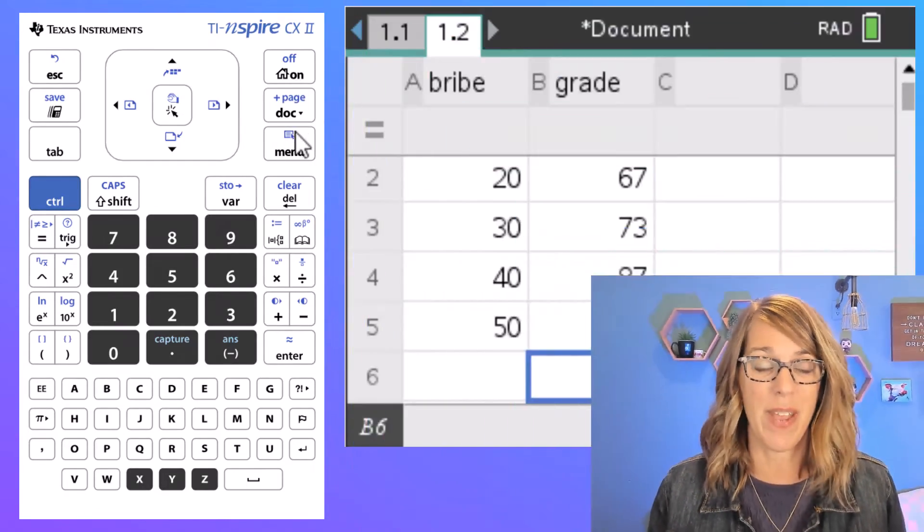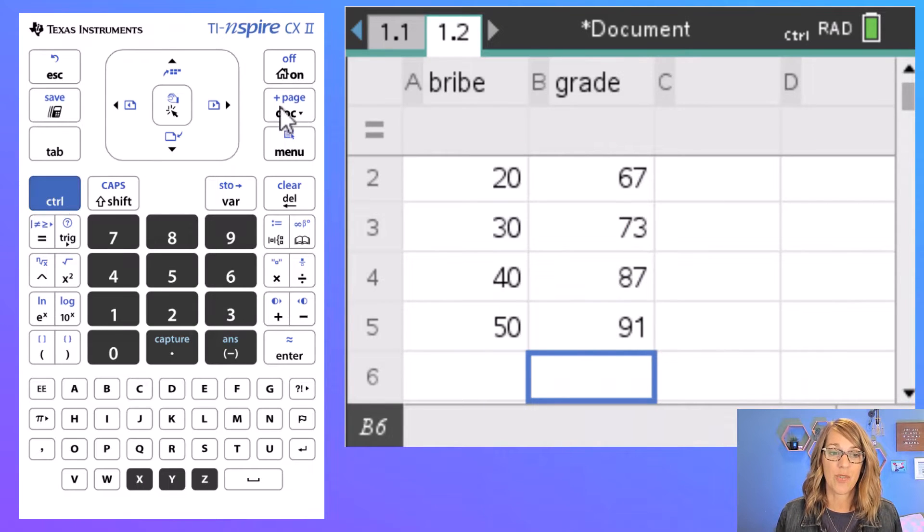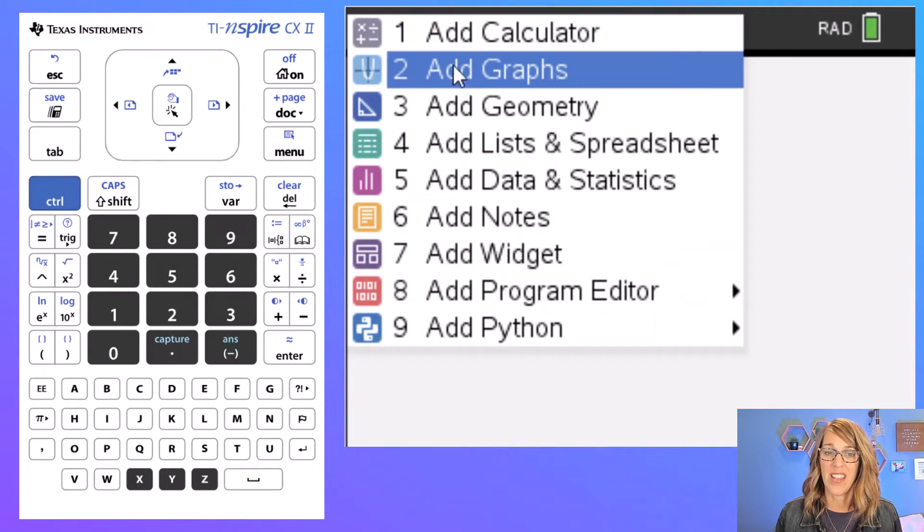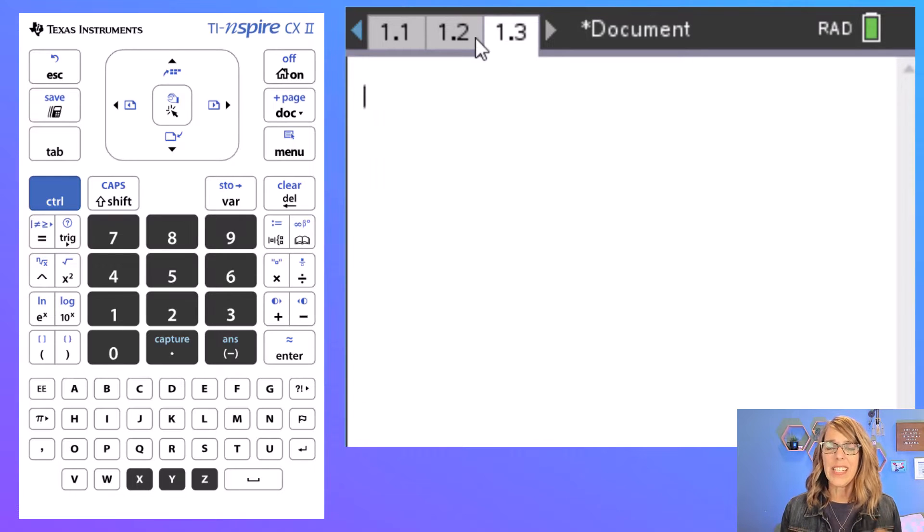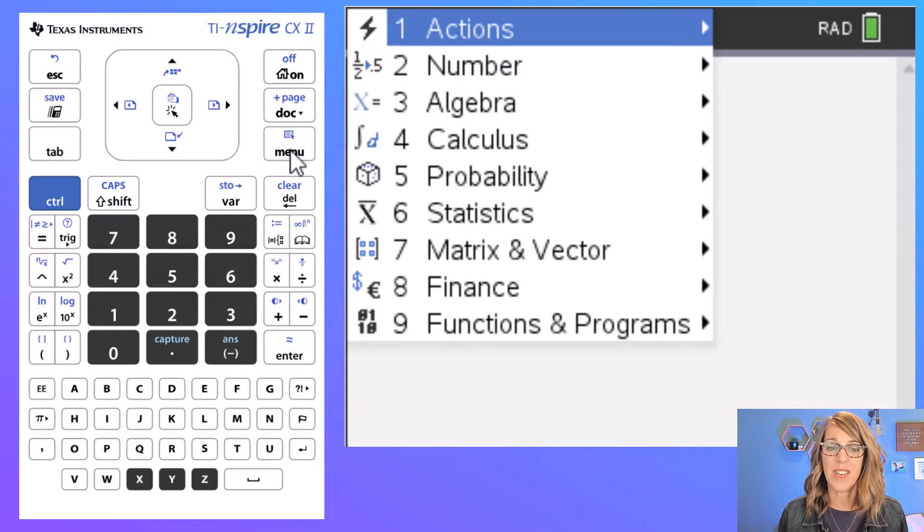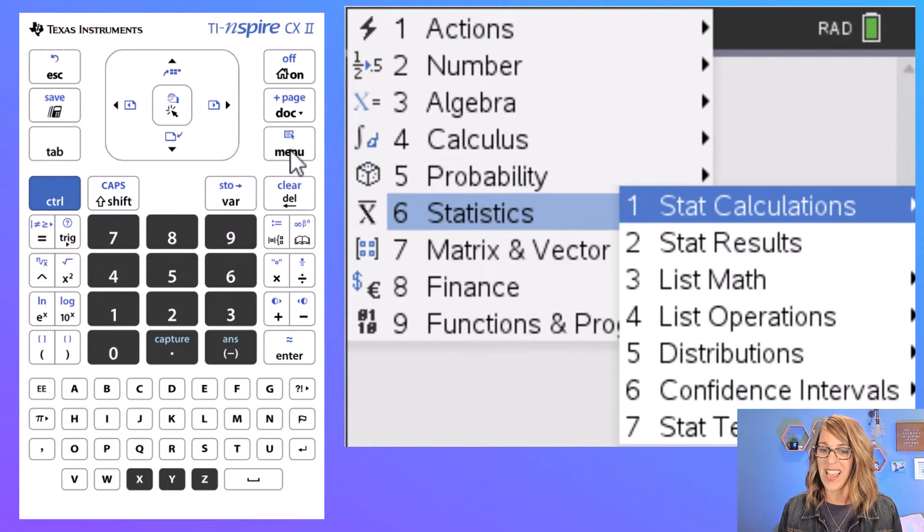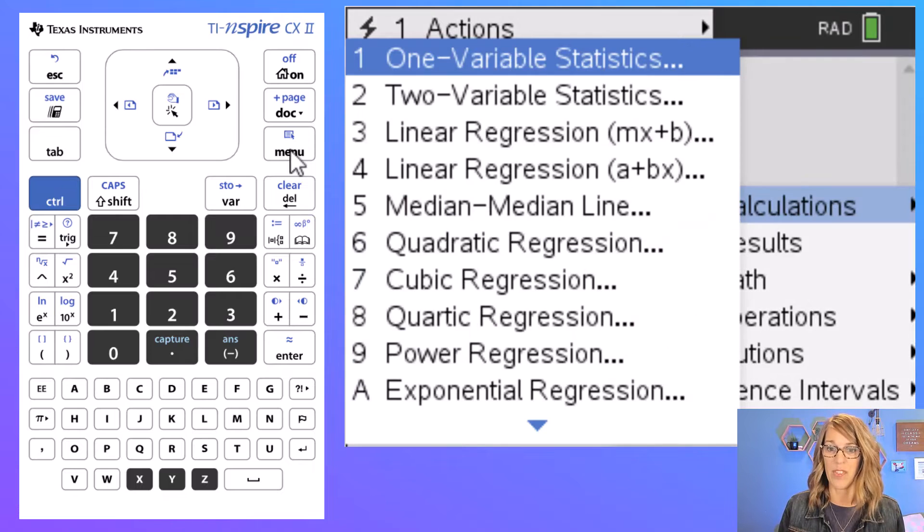Now you can compute your linear regression information here. I'm actually going to do it on a separate page on a calculator page. So we want to do control, add page, and then I want to add a calculator page. The linear regression is located in the stats menu, so I hit menu, down to statistics which is number six.